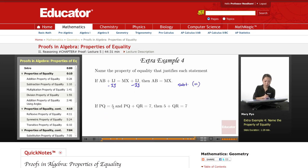The next one: if PQ equals 5 and PQ plus QR is 7, then 5 plus QR equals 7. So this was the equation. There's a value of PQ and then 5 was replaced with PQ. So this is substitution property of equality.